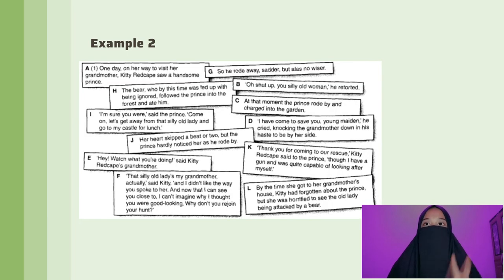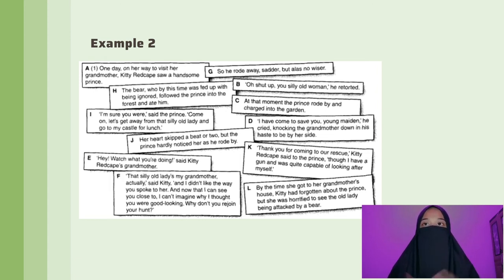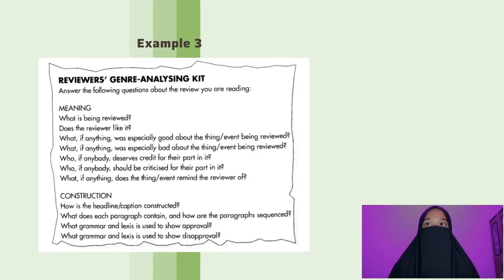Second example: If we want students to be aware of coherence, we can make them construct a story. Print out a story but jumble it up so that the students can repair it in pairs or groups. Third example: Students are asked to write a review of a place. They then have to use the following review-analyzing kit as shown in the table.